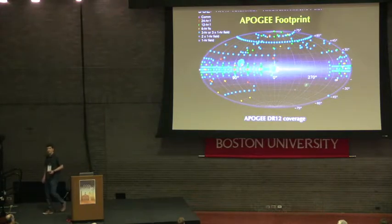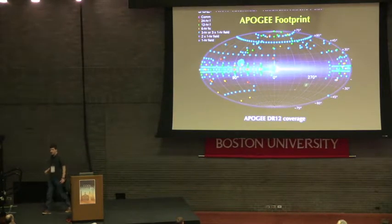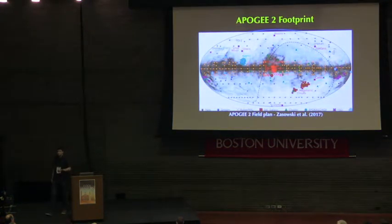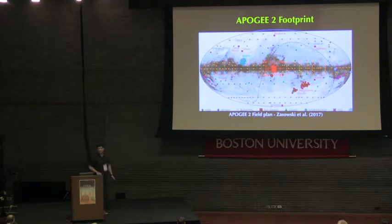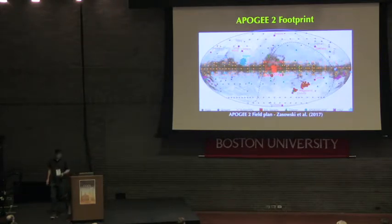This is the footprint of APOGEE 1, where we try to sample all the components of the galaxy — lots of halo pointings, disk pointings, bulge, and the Kepler field, which appears later in this talk. APOGEE 1 was based only at Apache Point, which is why there is a major gap in the south, which is being filled now by APOGEE 2, which includes LCO — the Las Campanas Observatory component. New additions include the Magellanic Clouds and other dwarf galaxies, plus lots of halo substructure and shared fields with the MaNGA survey.